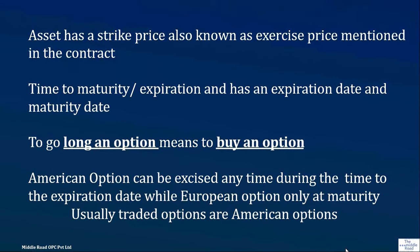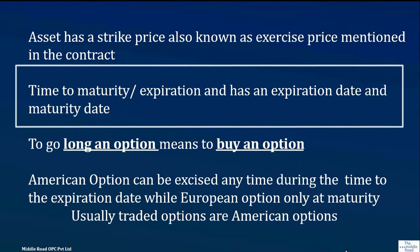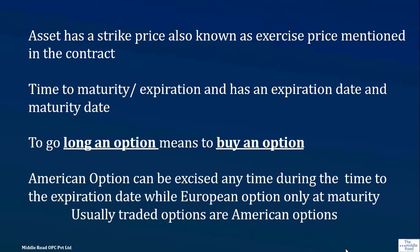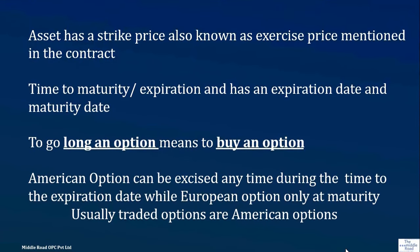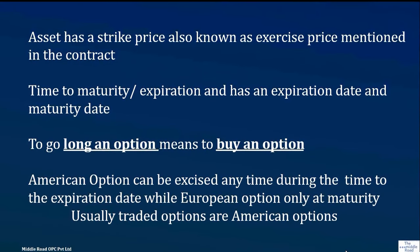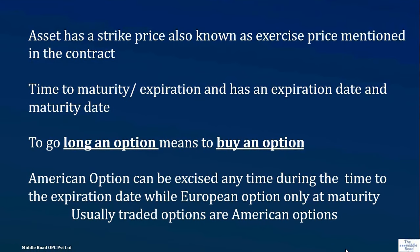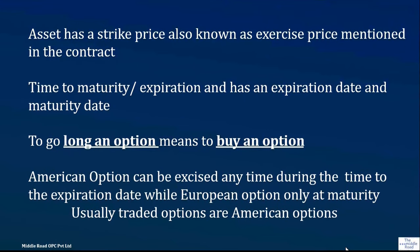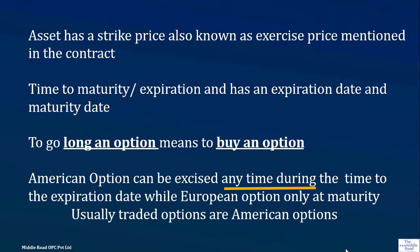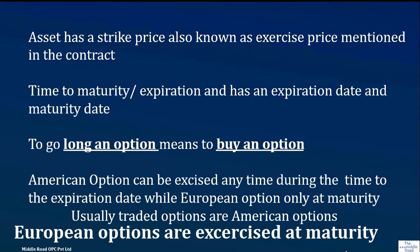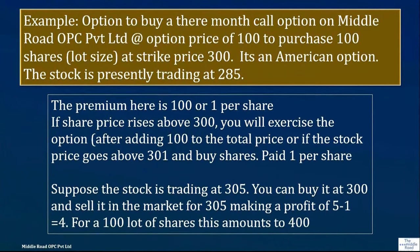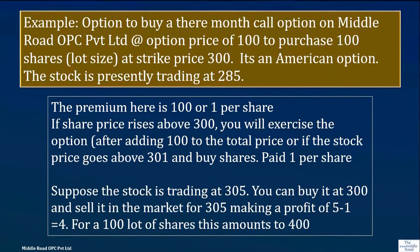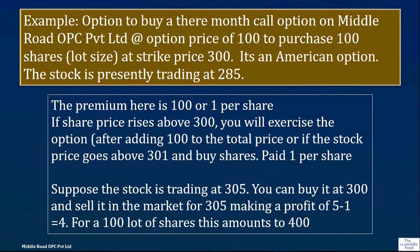Options have a time to expiration or maturity that can range from less than one month to a year or more, including daily options. When you are buying an option you are 'long' that option. American options can be exercised anytime up to the expiration date. European options can only be exercised at maturity. For today's examples we will focus on American options and only on buying a call option — we will not look at the payoff for selling a call option.